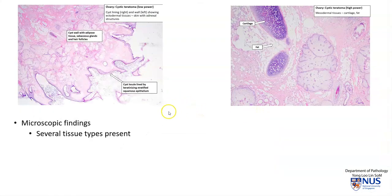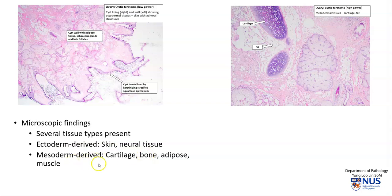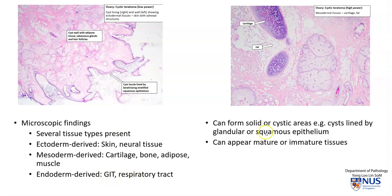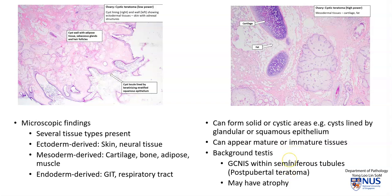There will be a separate video highlighting the microscopic features. However, usually there will be several types of tissues present. For example, ectodermal tissue would be skin and neural tissue commonly. Mesoderm-derived includes cartilage, bone, adipose tissue, and muscle. And endoderm-derived includes GI tract tissues and respiratory tract tissues. These tissues can form solid or cystic areas — for example, cyst locules lined by stratified squamous epithelium. They can appear mature or immature in postpubertal-type teratomas. The background testes in the context of postpubertal-type teratomas will also show changes such as germ cell neoplasia in situ and atrophic changes.